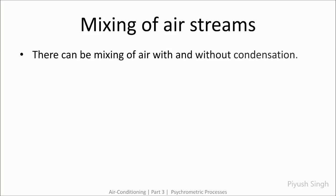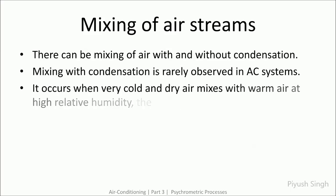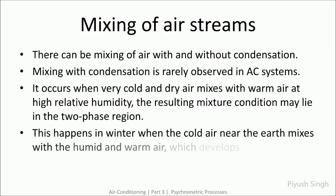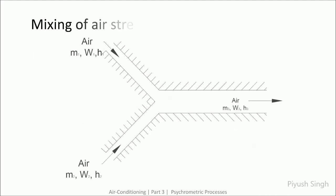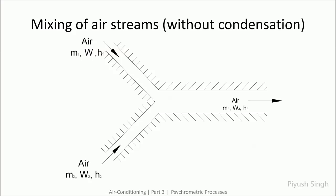The first process we'll be discussing is mixing of air streams, which can occur with and without condensation. Mixing with condensation is avoided in air conditioning systems and hence is rarely observed. In nature, mixing with condensation may be observed in winters and after rains when cold and dry air mixes with hot and humid air causing some dew drops to appear. In air conditioning systems, what we observe is mixing without condensation.